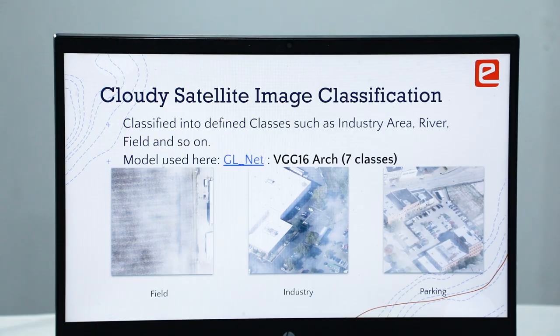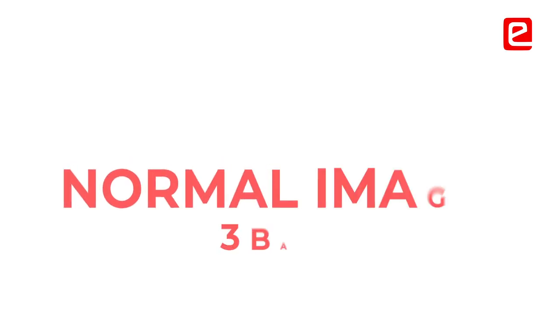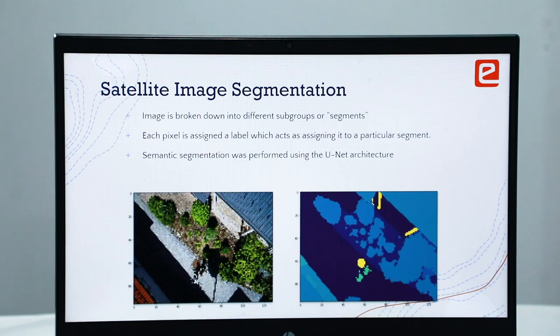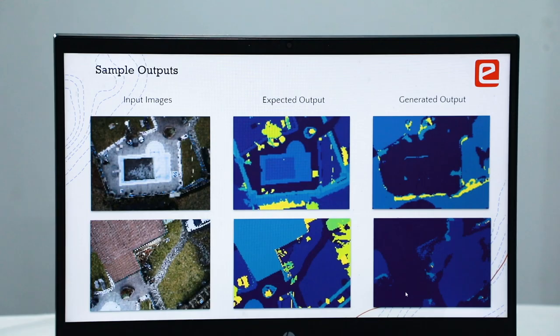The datasets we use from satellites are different from images we get from phones — they are totally different. Normal images have only three bands, but satellite images have multiple bands, and getting an understanding of them before working on these models is quite useful.